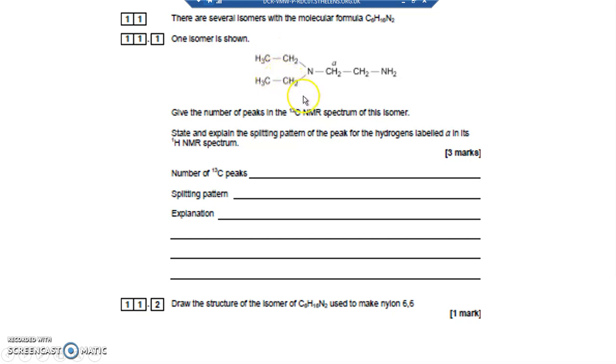So how many different carbon environments are there? Well it's symmetrical from that N onwards, up and down. So those two carbons are the same environments, that's one. Those two CH2's are in the same environment, that's the second one, both bonded to that N.